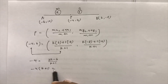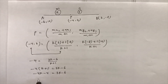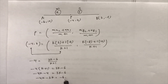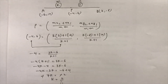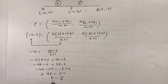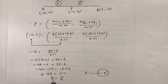Cross-multiplying: -4(k + 1) = 3k - 6, giving -4k - 4 = 3k - 6. Rearranging: -4k - 3k = -6 + 4, so -7k = -2. The negatives cancel, giving k = 2/7. Since the ratio was k is to 1, the ratio is 2/7 is to 1, which is 2 is to 7. The ratio is 2 is to 7.